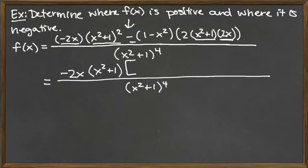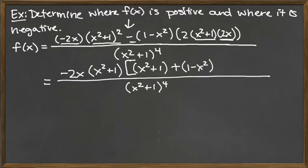Once I've pulled out my greatest common factor, I use a big bracket to track what's the common factor and what's the leftover part. I pulled out negative 2x and one copy of x squared plus 1. So I have one remaining copy of x squared plus 1 that comes in front of the subtraction sign. After pulling the subtraction sign out — taking the negative part out with my 2x — I'm left with a plus instead of a subtraction, giving the factor 1 minus x squared and a factor of 2 remaining inside the bracket.